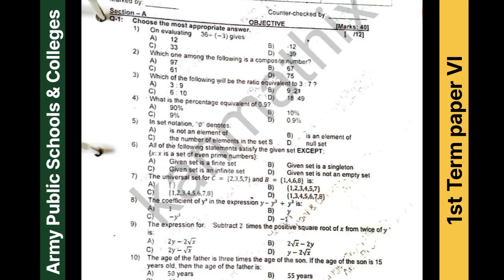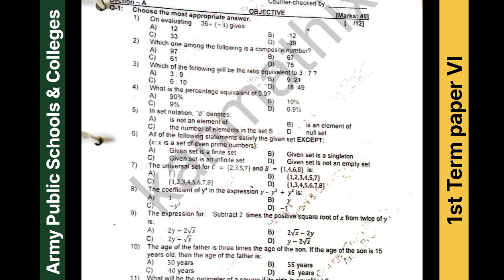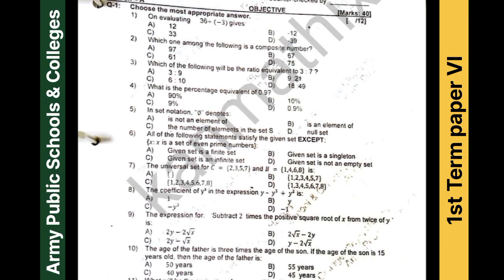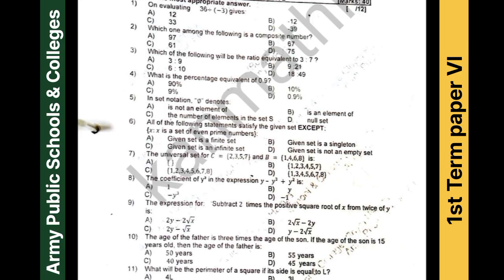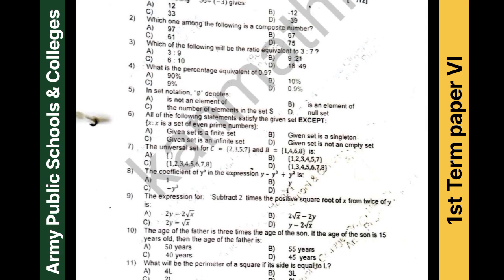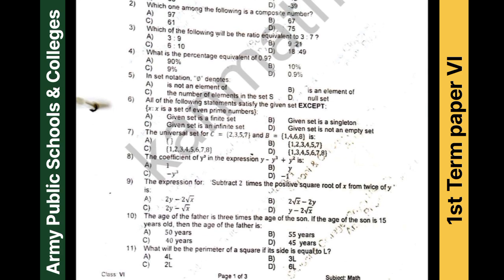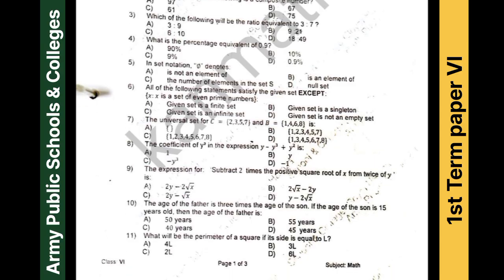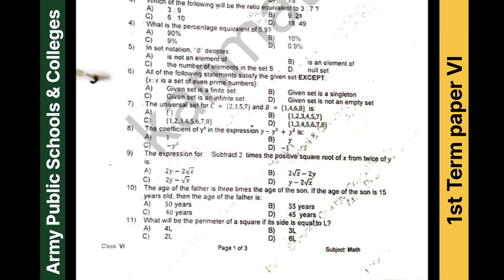Question number one: choose the most appropriate answers. As you can see, the first MCQ is from the first chapter, second is also from the first chapter, third is from rate, ratio and percentages, fourth is also from rate, ratio and percentages, fifth is from set notation — introduction to sets. There are three MCQs from sets. Then MCQs from chapter number four — there are about three to four MCQs from chapter four.